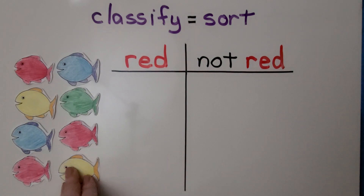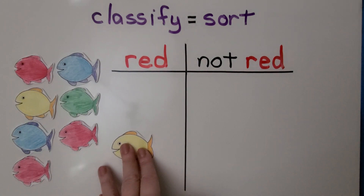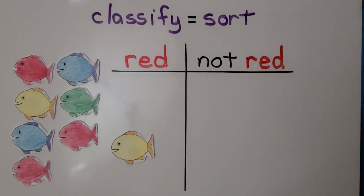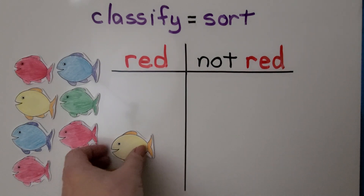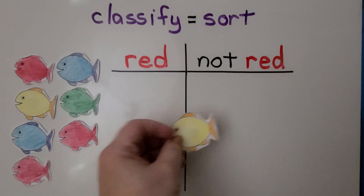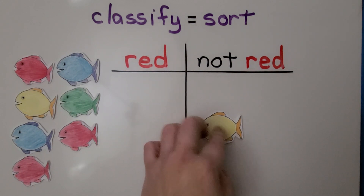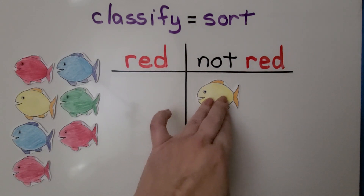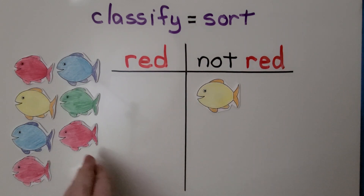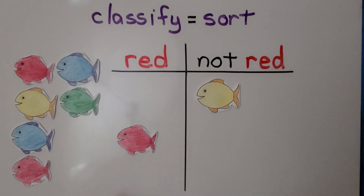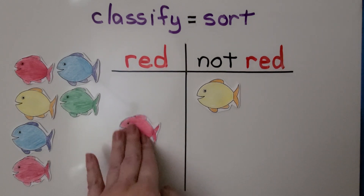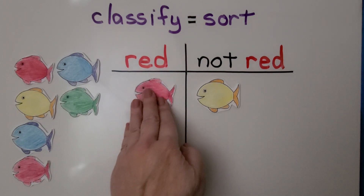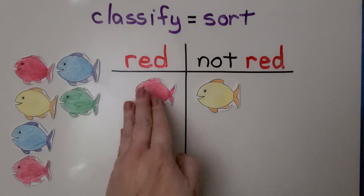This fish — is this red? No, that's yellow. So that's going to go on the not-red side. What about this fish — is this red? Yes, it is. So we're going to put it on the red side.